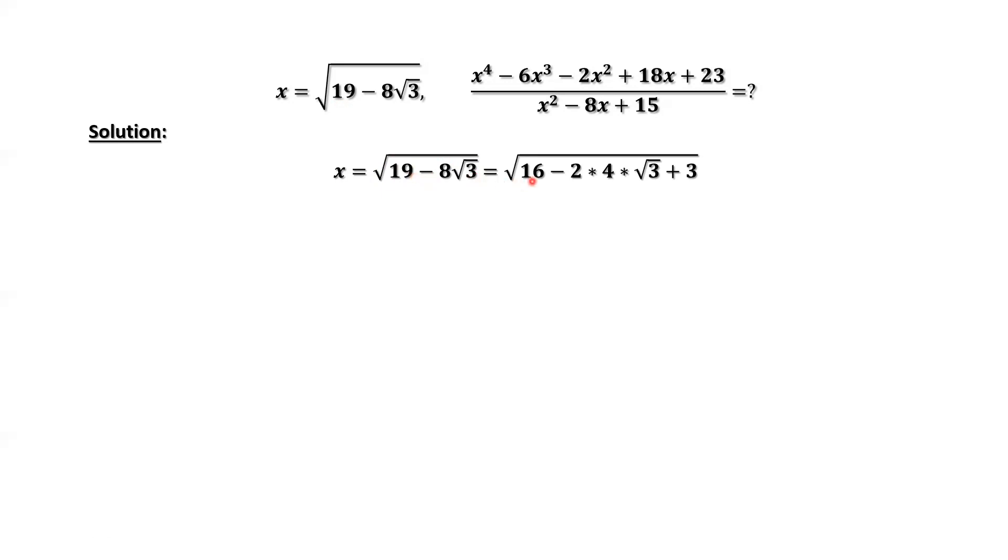19 is 16 plus 3. 8 is 2 times 4 times square root of 3. 16 is 4 squared. We can rewrite the inside part as 4 minus square root of 3, then square. Square and square root cancel. So we only have one value, four minus square root of three. Four is bigger than square root of three, so this number is positive.